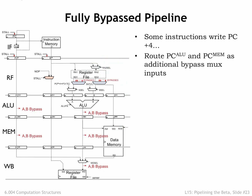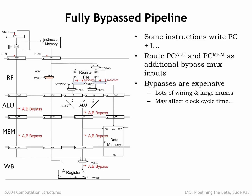Here's a diagram showing all the bypass paths we'll need. Note that branches and jumps write their PC+4 value into the register file, so we need to bypass from the PC+4 values in their various stages as well as the ALU values. The bypassing happens at the end of the cycle, after the ALU has computed its answer. To accommodate the extra TPD of the bypass MUXs, we'll have to extend the clock period by a small amount. So there's a design trade-off: the increased CPI of stalling versus the slightly increased cycle time of bypassing, plus the extra area needed for the necessary wiring and MUXs.